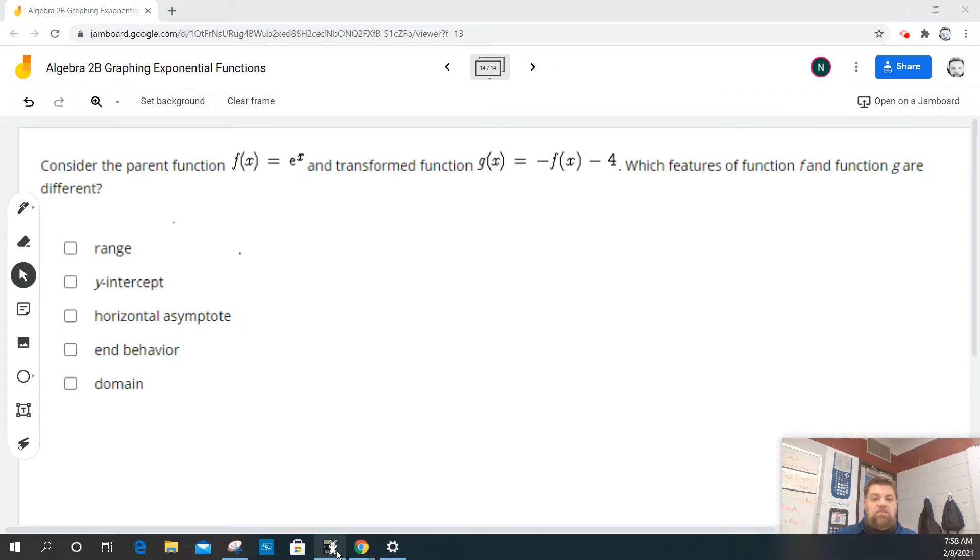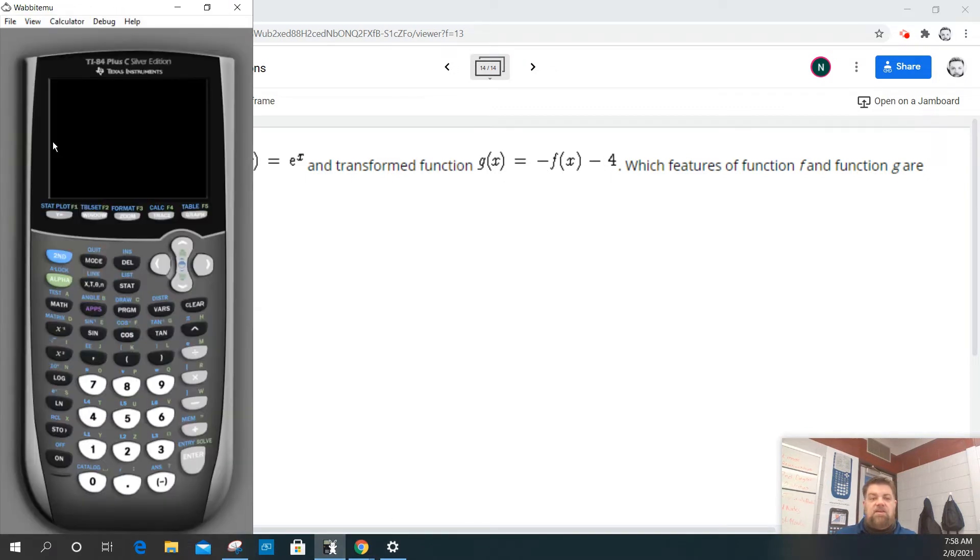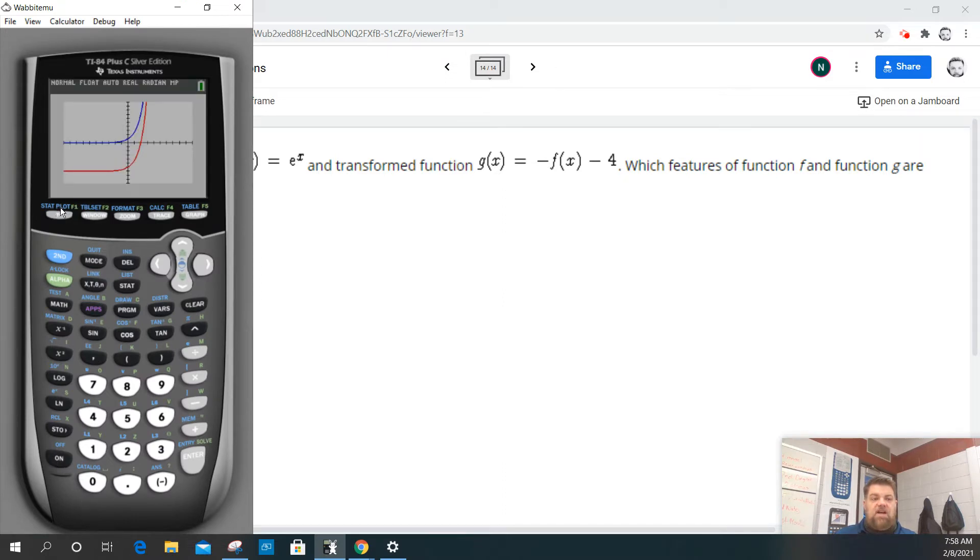So let's just graph that and then take a look and see what's going on. I already have the parent function plugged in, but now if f of x is e to the x, negative f of x is just negative e to the x, and then we have to subtract 4 from that.